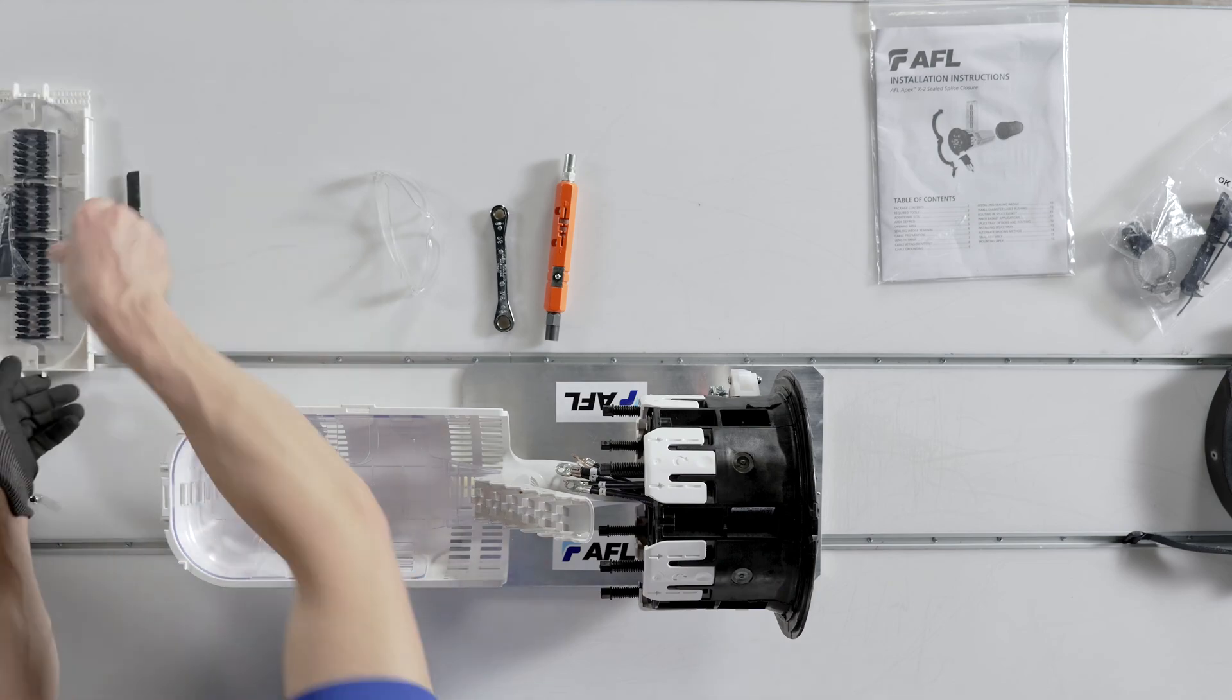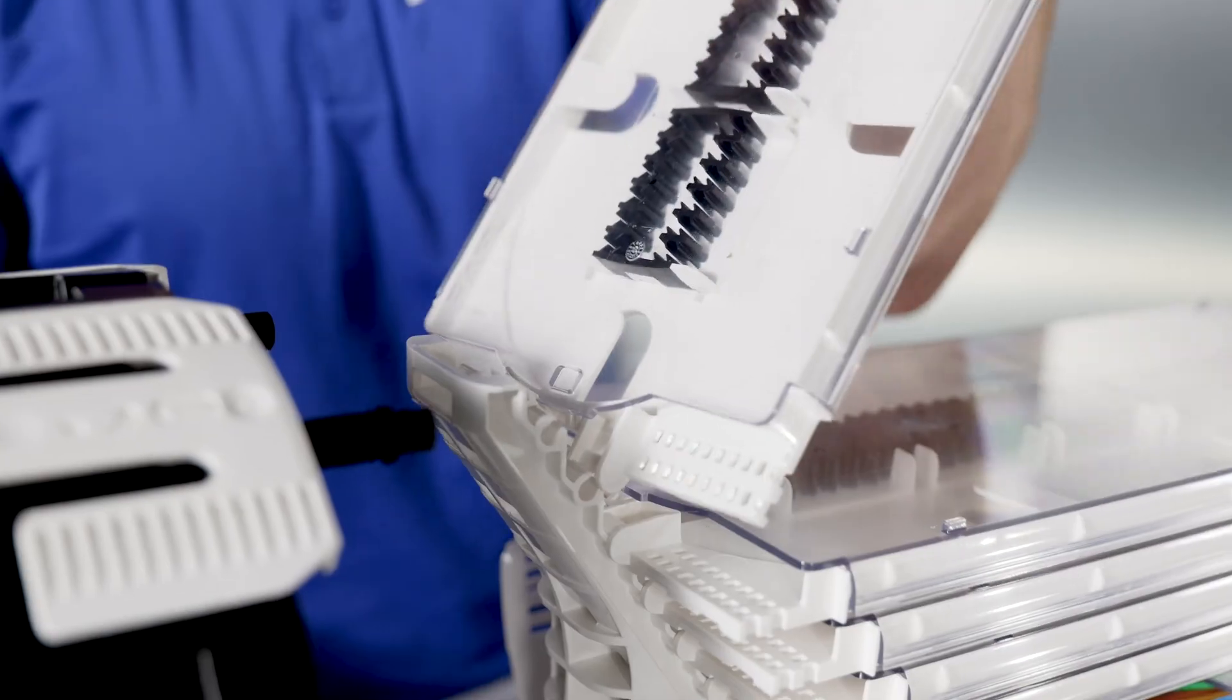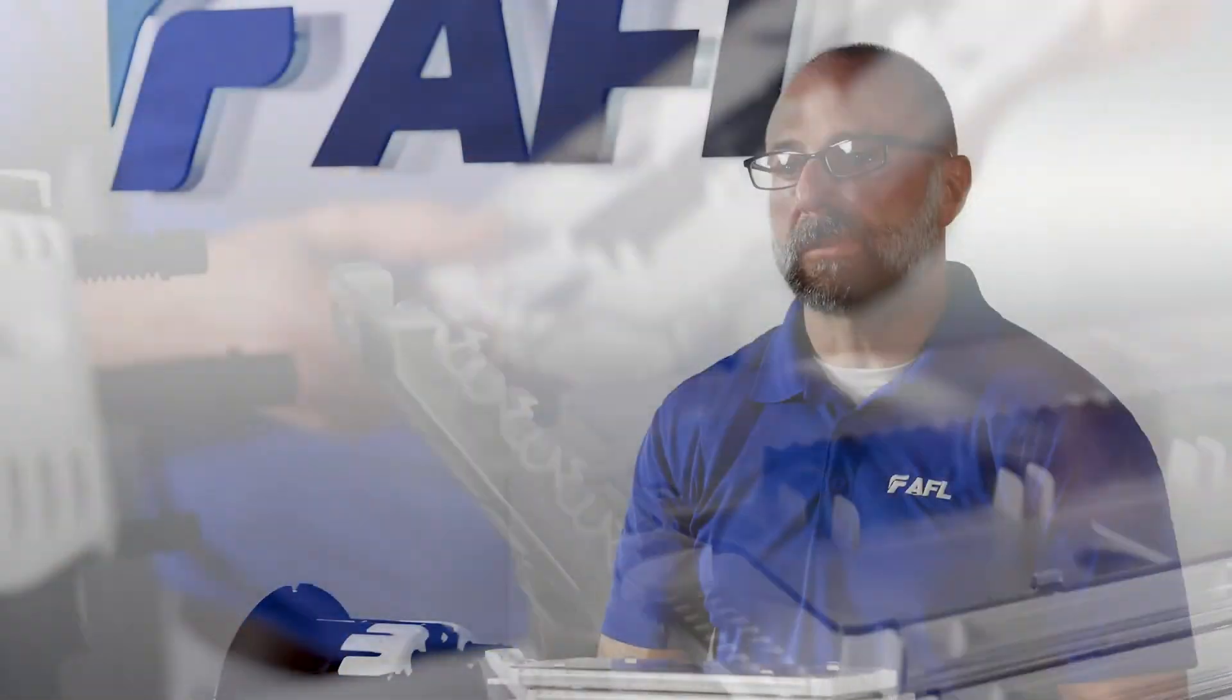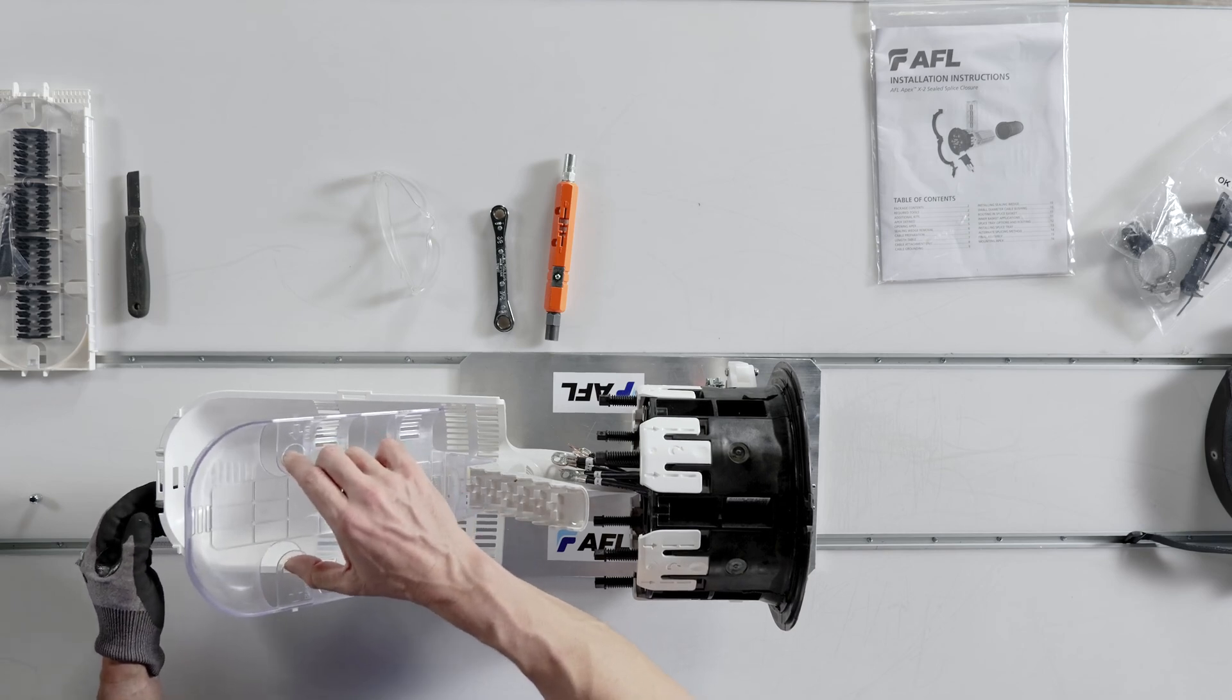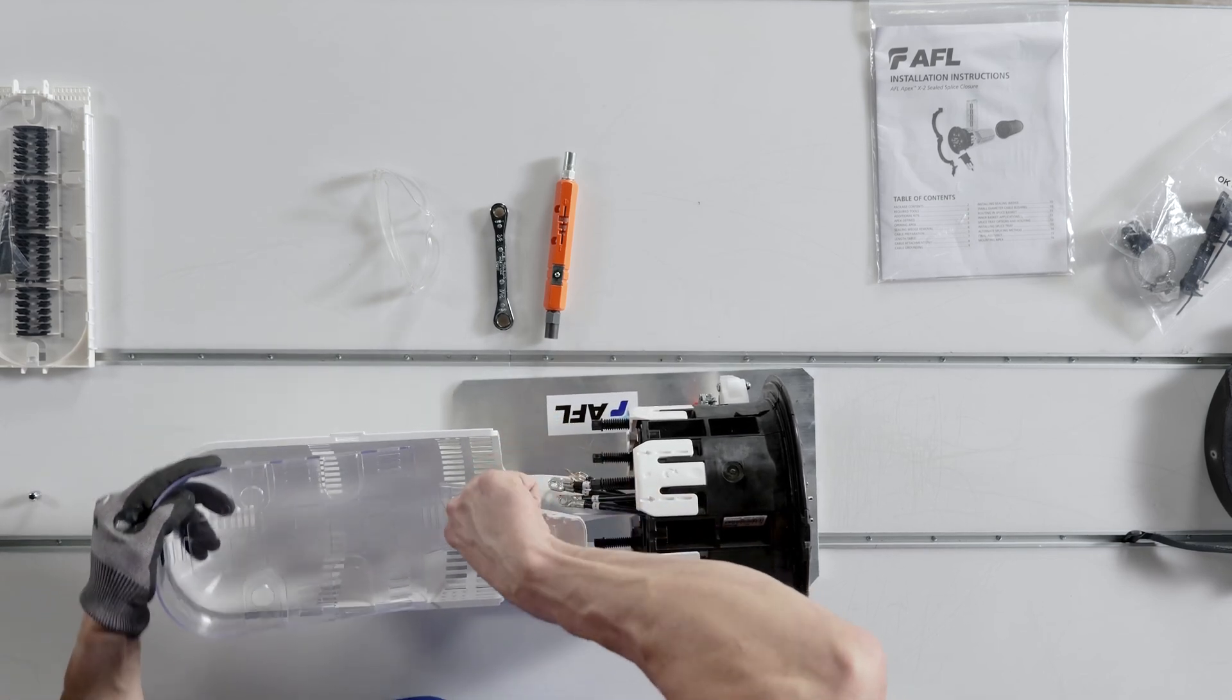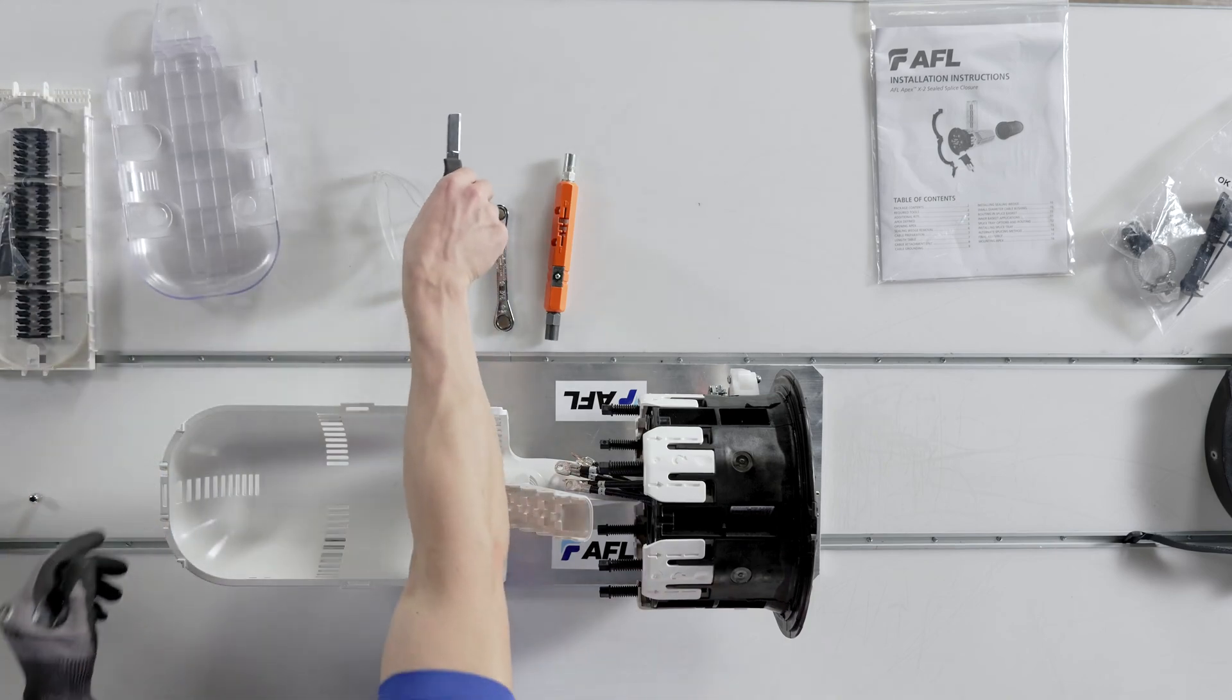For all versions of X3, simply raise the tray to about 45 degrees and rotate the tray from spline. Do not force it; there is a spot where it is designed to be released as well as installed. If the apex was ordered with an inner basket, it will be removed in the same fashion as the tray according to the closure family. Disengage the hinge on the X1 and X2, and on X3 lift the inner basket to 45 degrees to disengage the inner basket.